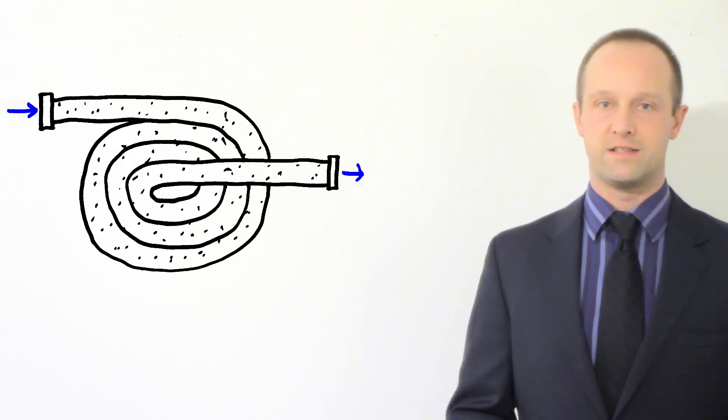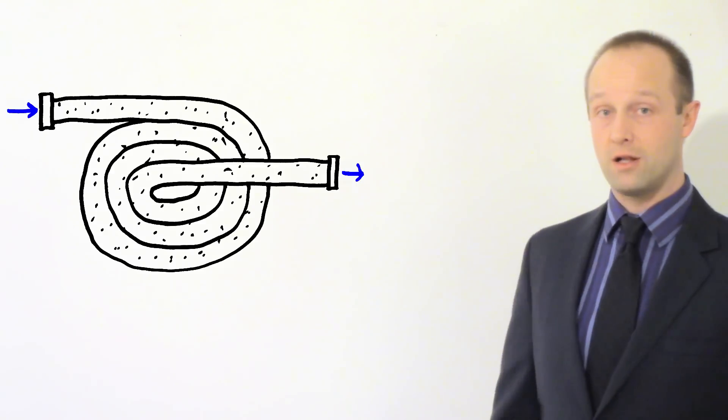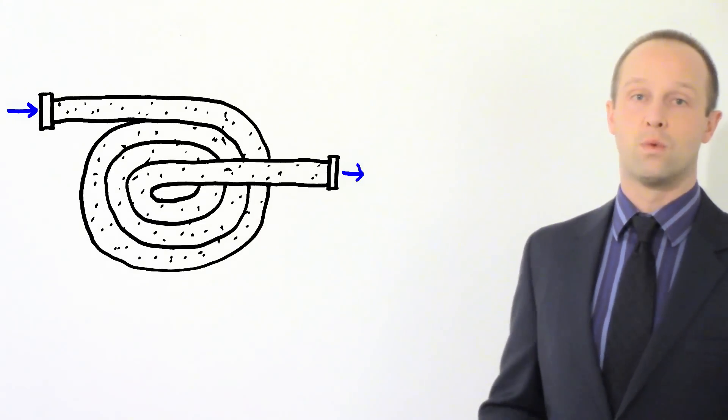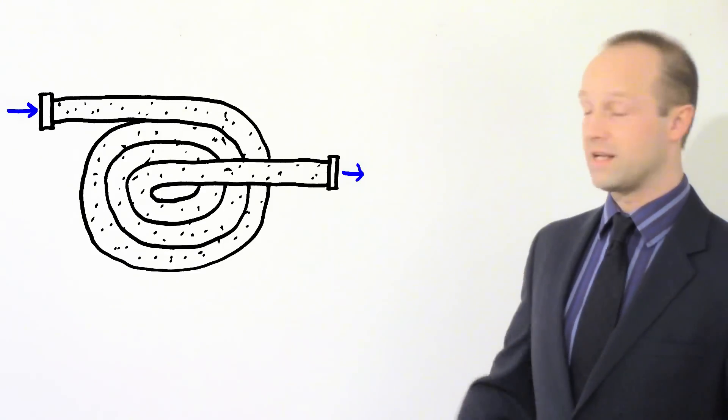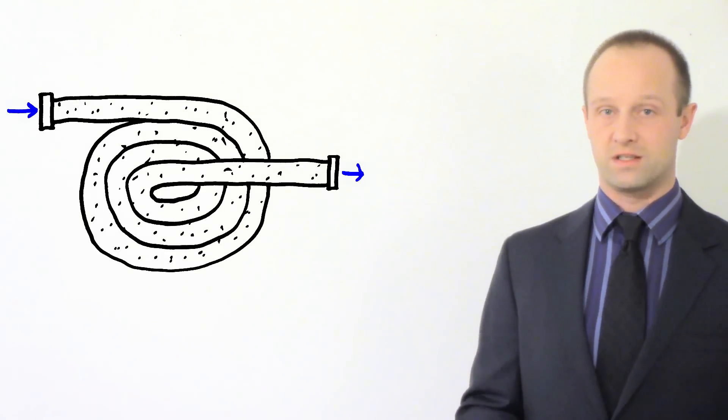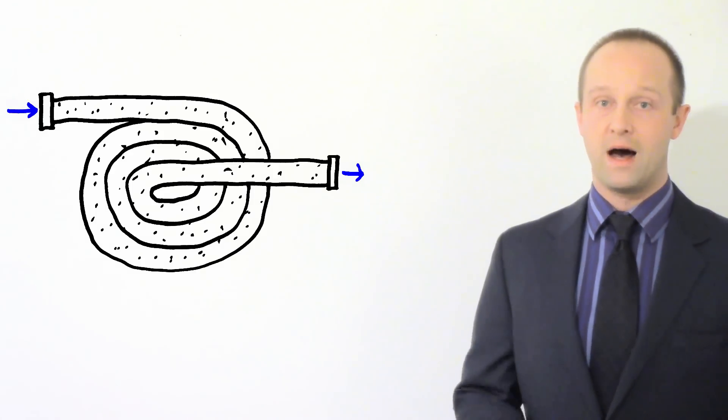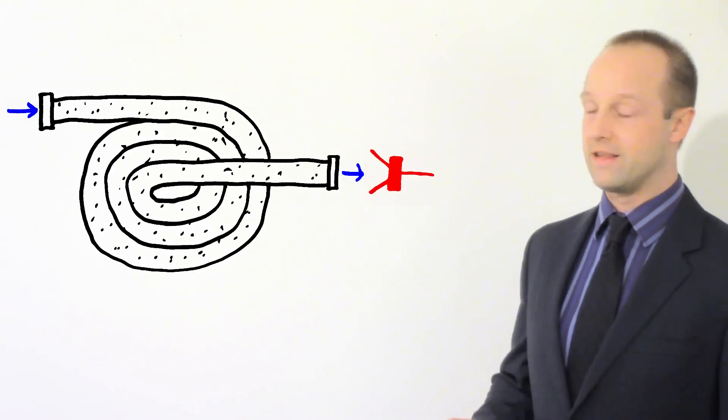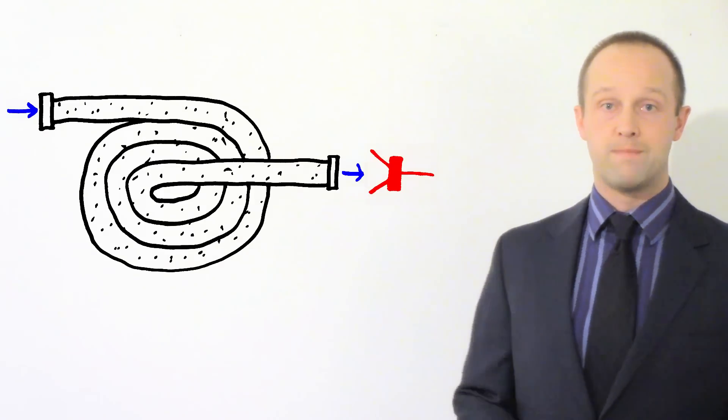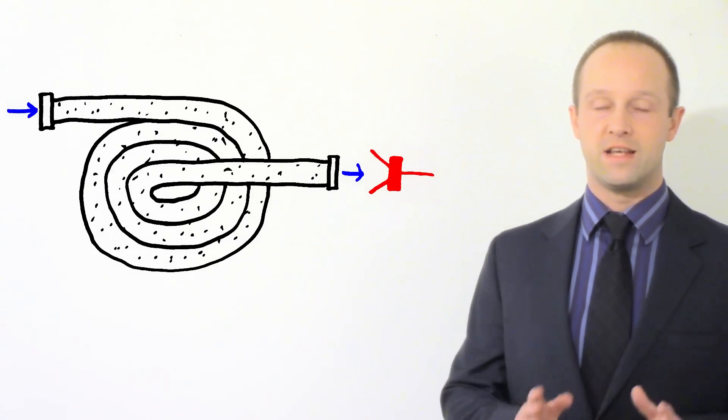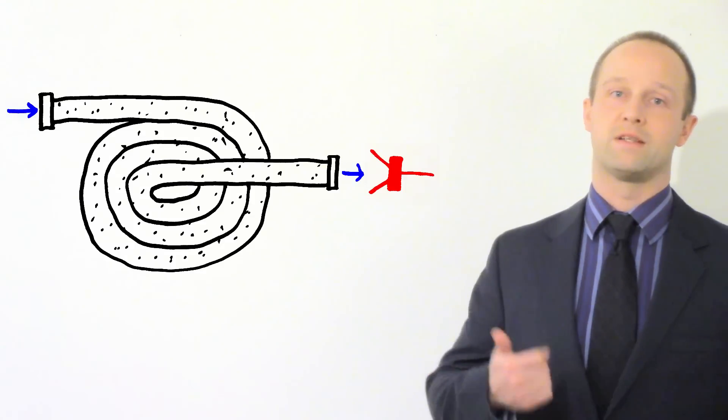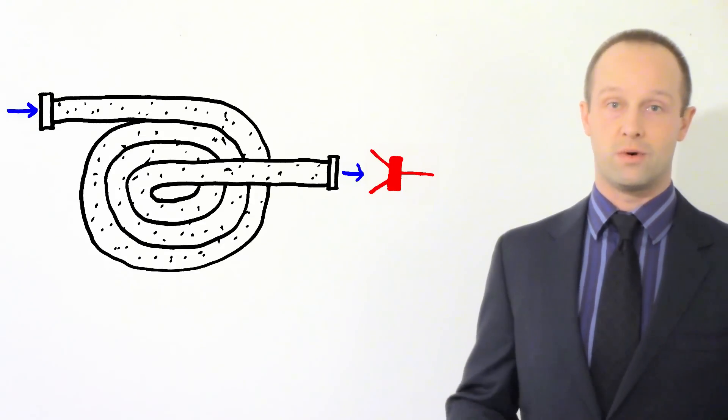Rather than looking at the distance that these compounds get along the column what we do is time how long it takes for them to get to the end. And so the one which is moving fastest will get to the end first and then the next one will get to the end and the one which is moving slowest will get to the end last of all. And there'll be some sort of sensor at the end which detects when those compounds are coming out of the other end. And basically what we'll get is a series of times. So we'll get a time for the first compound, a time for the next compound and a time for the next compound and so on.